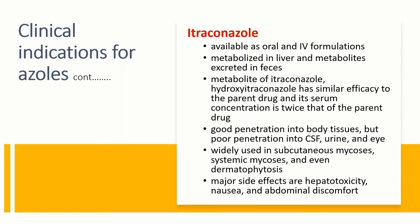Itraconazole is available as oral and IV preparations. The drug is metabolized in the liver and metabolites are excreted in feces. The major metabolite is hydroxy-itraconazole, which has similar efficacy to the parent drug, with serum concentrations twice that of itraconazole. The drug has good tissue penetration but poor penetration into CSF, urine, and eyes, so itraconazole should be avoided for CNS, urinary tract, and ocular infections.